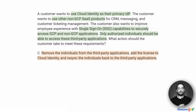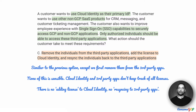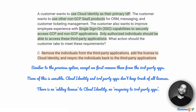Option C suggests: remove the individuals from the third-party applications, add the license to Cloud Identity, and resync the individuals back to the third-party applications. Similar to Option A, except we first remove them from the third-party apps. The assumption here is that each user already has an account there. But adding a license to Cloud Identity is not possible — you don't add a license for that software there. And resyncing to make sure they have all the access is also not how identity providers work. Therefore, we eliminate Option C as well.